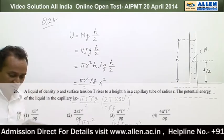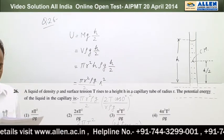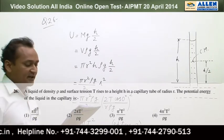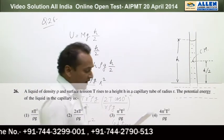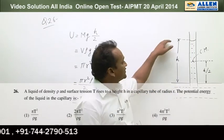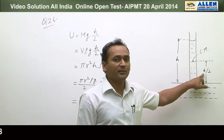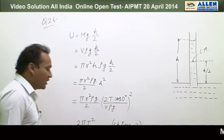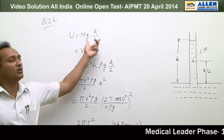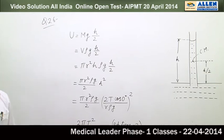Question number 26. This question involves a liquid edge with density ρ, surface tension T, in a capillary tube of radius r. The liquid height is given as h. The center of mass is located at exactly the midpoint, at height h/2, because this is a distributed mass object.